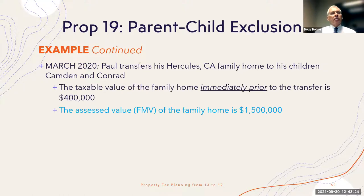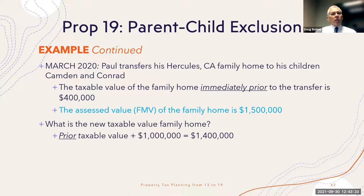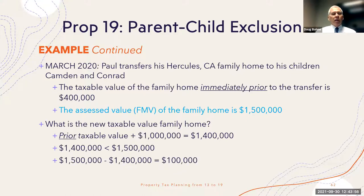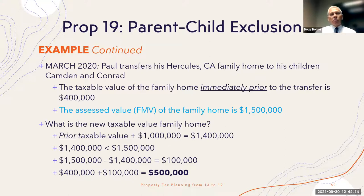Now let's see what happens if the fair market value of the home being transferred to Camden and Conrad is $1.5 million. We run the same calculation: prior taxable value of $400,000 plus $1 million equals $1.4 million. We compare that to the actual fair market value of $1.5 million — it's $100,000 greater. So $1.5 million minus $1.4 million is $100,000, and that $100,000 is added to the base year assessed value. The new assessed value goes from $400,000 to $500,000. Under the old law, the assessed value would have remained $400,000 regardless. Now there is a $1 million exclusion before you start adding to the property tax base when transferring to children.